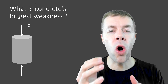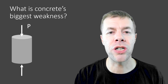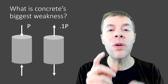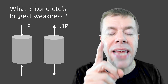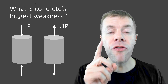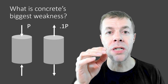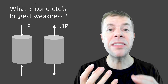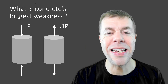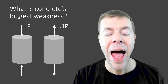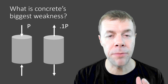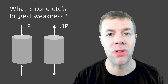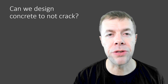Now, concrete is pretty strong in compression. However, in tension it's weak. It only takes one-tenth of the load to fail it in tension compared to compression. That means it's one-tenth as strong in tension as it is in compression, and that's why you see cracks all over the place in concrete.